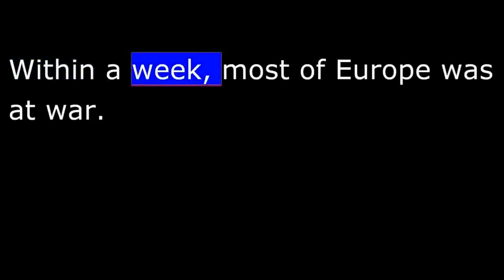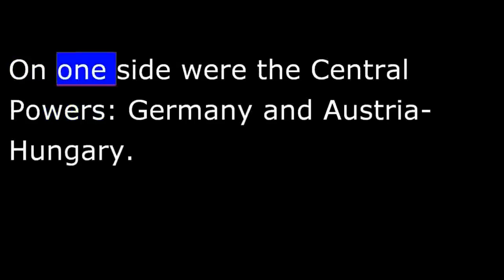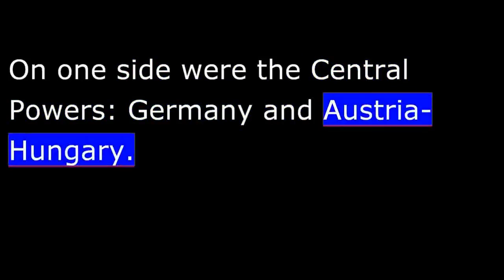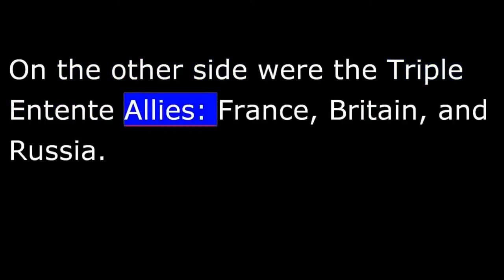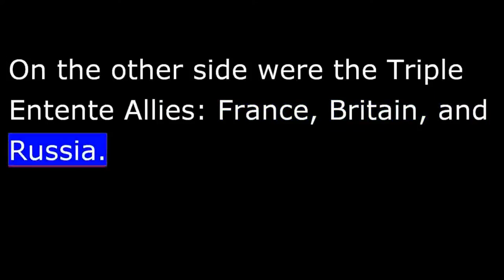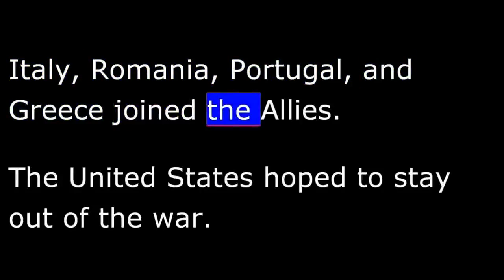Within a week, most of Europe was at war. On one side were the Central Powers, Germany and Austria-Hungary. On the other side were the Triple Entente allies, France, Britain and Russia. Many other nations took sides. Bulgaria and Turkey joined the Central Powers. Italy, Romania, Portugal and Greece joined the Allies.